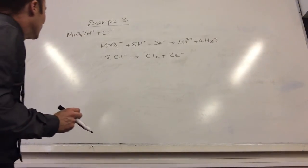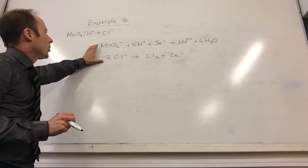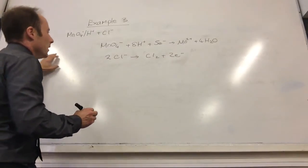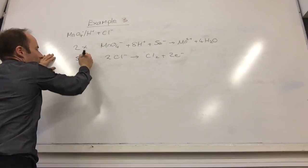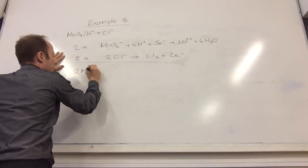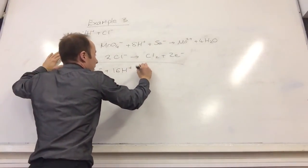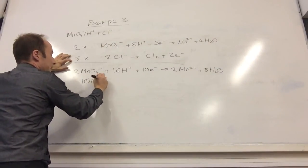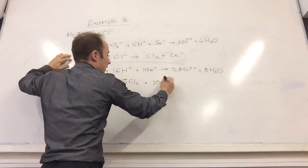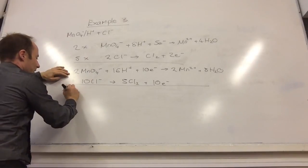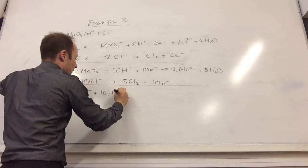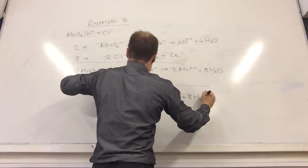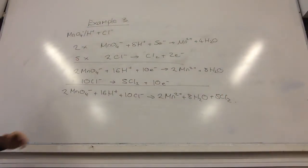Let's do one more. We've already got the equations on the correct side. This is my reactant and that's my reactant. Five electrons here and two electrons here, so this equation needs to be times by two and that one times by five. That becomes 2MnO4 minus plus 16H+ plus 10 electrons goes to 2Mn2+ plus 8H2O. This one times by five: 10Cl minus goes to 5Cl2 plus 10 electrons. Add these together — the electrons cancel — and that is the final overall equation.